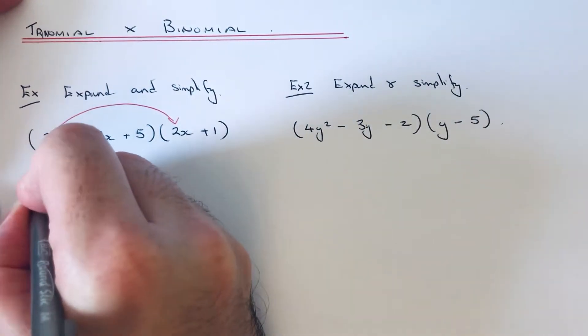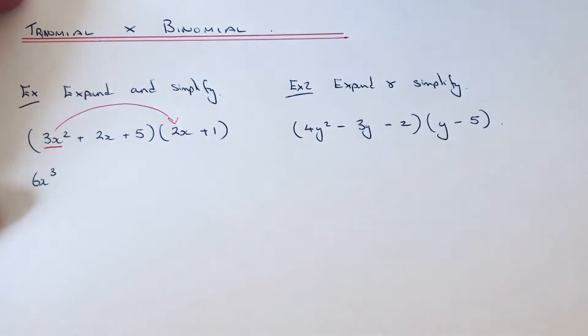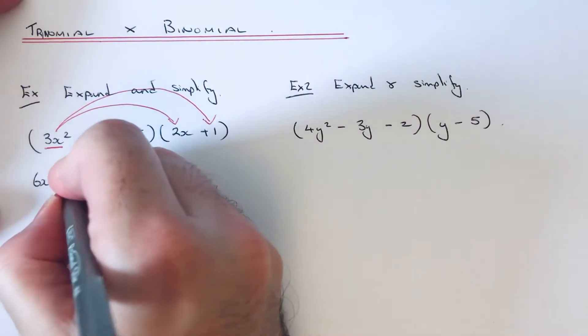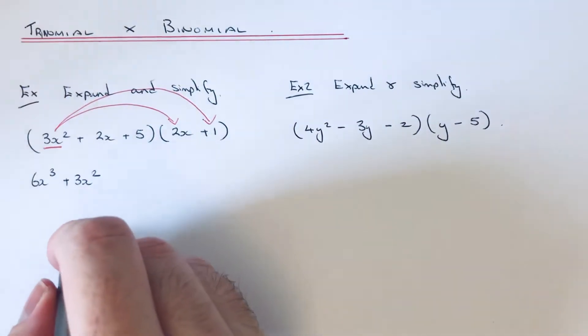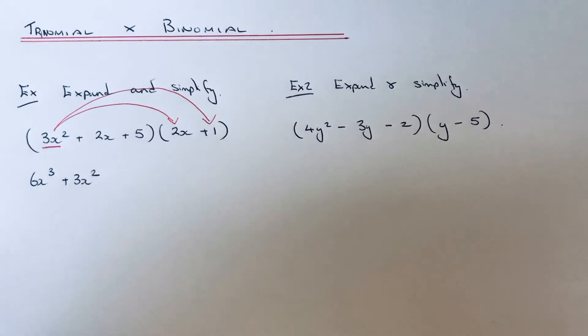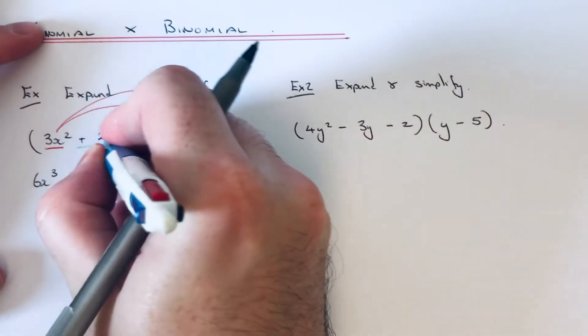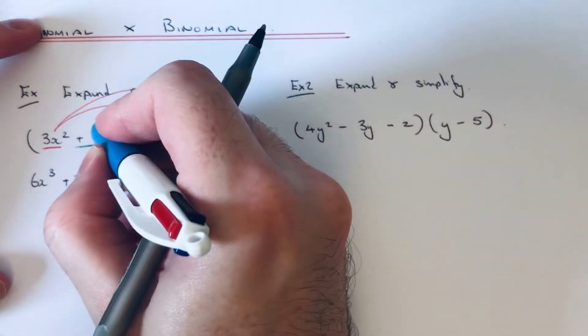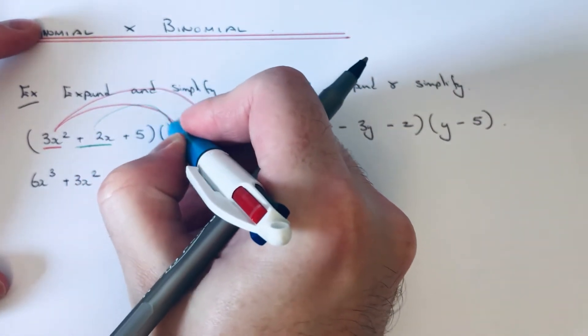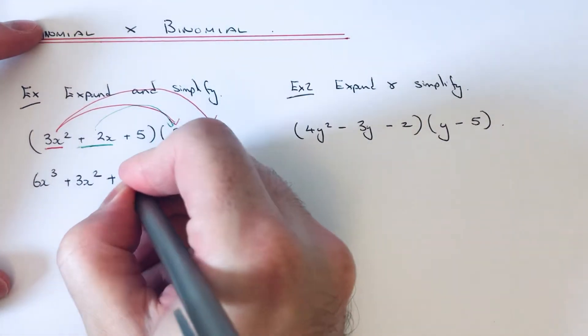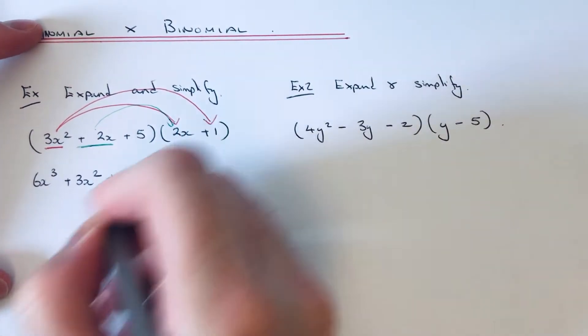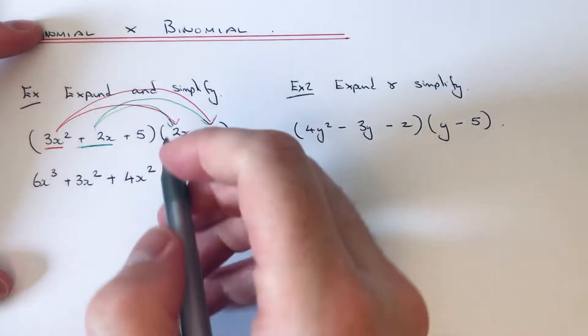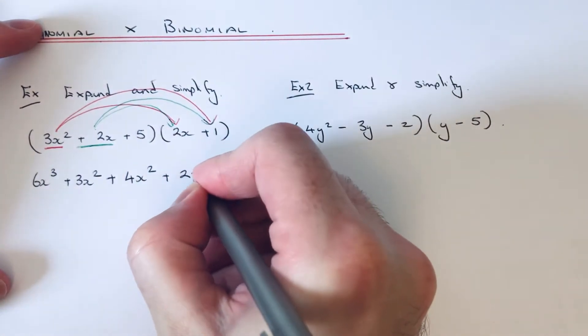And then do 3x² times 1, which is 3x². We move to our second term which is the 2x, and multiply the 2x by both terms in the second bracket. So if we do 2x times 2x, that is 4x², and do 2x times the 1, which is 2x.